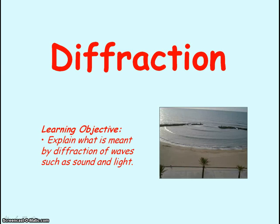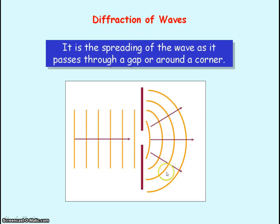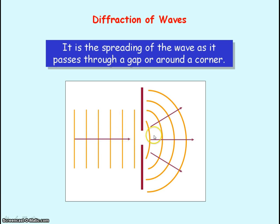We're going to be looking at diffraction of waves. Diffraction is the spreading out of a wave as it passes through a gap or moves around a corner. The orange lines represent the wave fronts — for example, the crest of the wave — and the distance between the wave fronts represents the wavelength. It's important to note that in diffraction, the wavelength of the wave does not change after it passes through the gap, so when you draw the diagram the distance between the wave fronts remains the same.